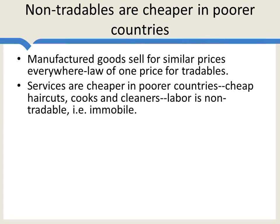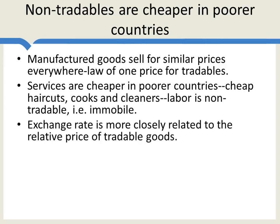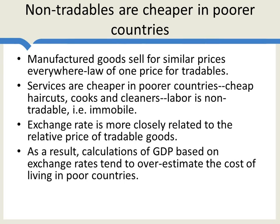The same is not true for services. Services tend to be quite a bit cheaper in poorer countries — you can get cheap haircuts, cheap cooks, and cheap house cleaners in a poorer country. This is because labor is non-tradable; labor, at least in our world, is immobile. So, for example, you can get a cheap cook in India and an expensive cook in the United States, but you don't see lots of cooks moving from India to the United States, at least not compared to the numbers of people who could move. So the exchange rate is more closely related to the relative price of tradable goods. Tradable goods will be exchanged through arbitrage until the exchange rate makes tradable goods sell for about the same price everywhere. The same is not true for labor, for service goods, for non-tradables, for immobile goods.